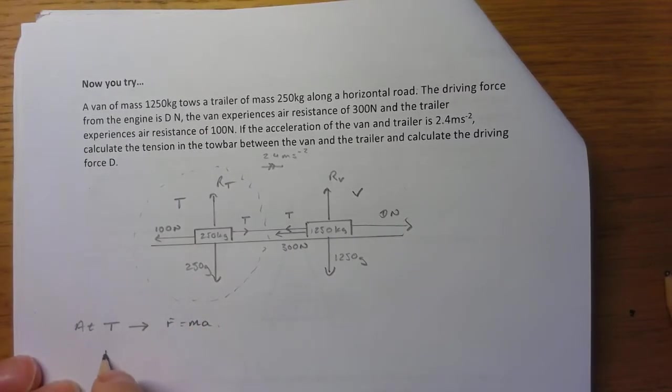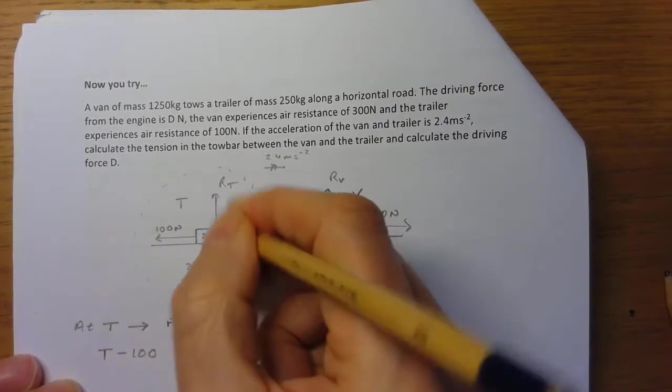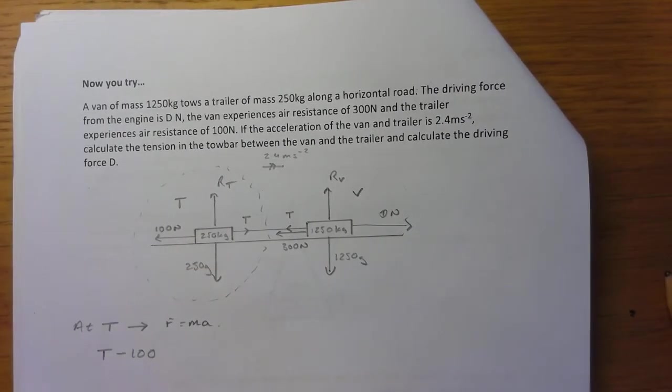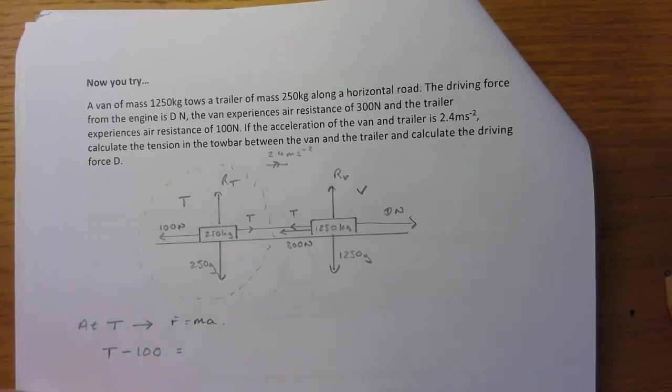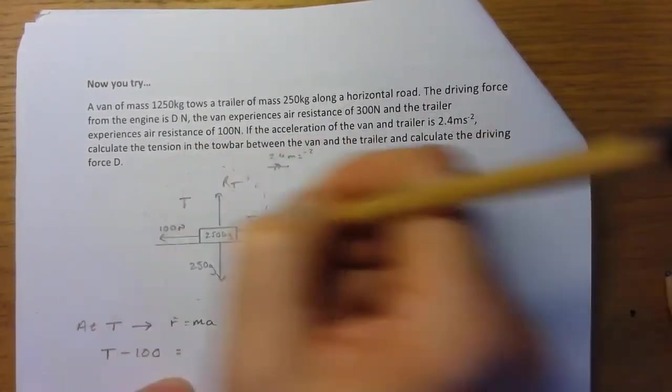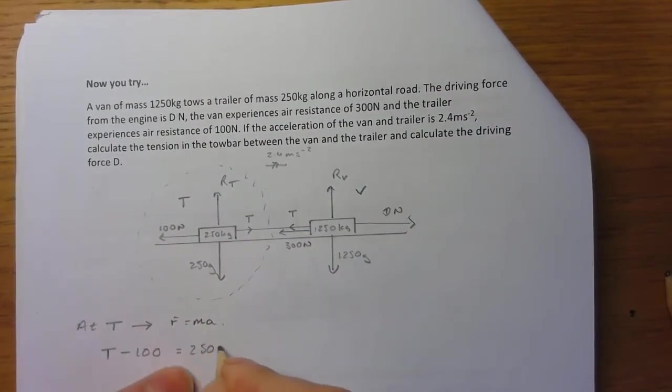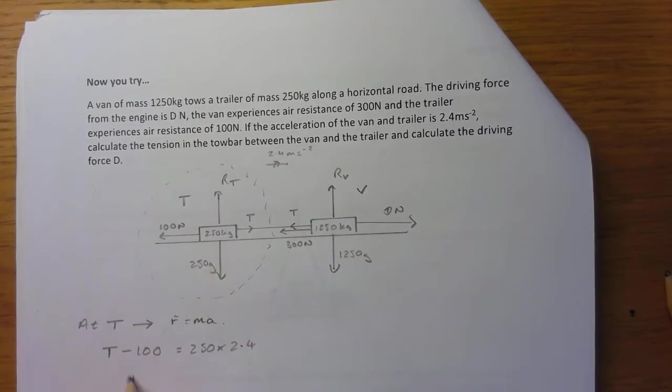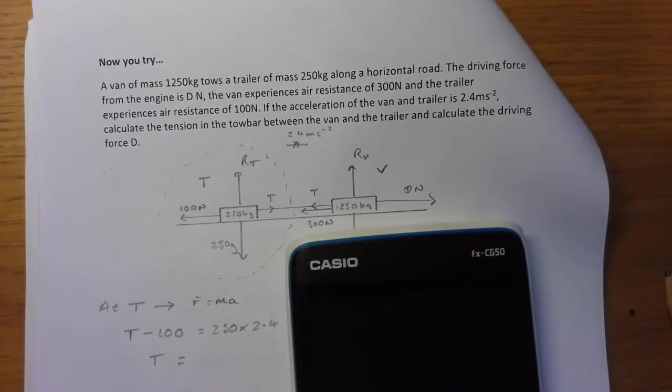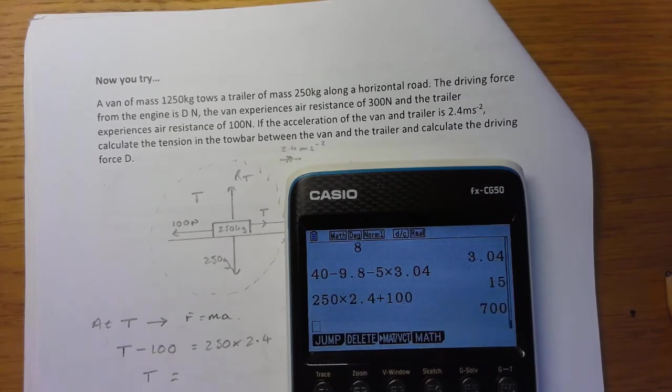Okay, so I've got T minus 100. These two forces have no effects on this system because they're perpendicular to the direction that we're resolving, so they have no effect that way. So I can completely ignore those two. But T minus 100 equals mass, which is 250, times acceleration, which is 2.4. So T is equal to 250 times 2.4 plus 100, which is 700 newtons.